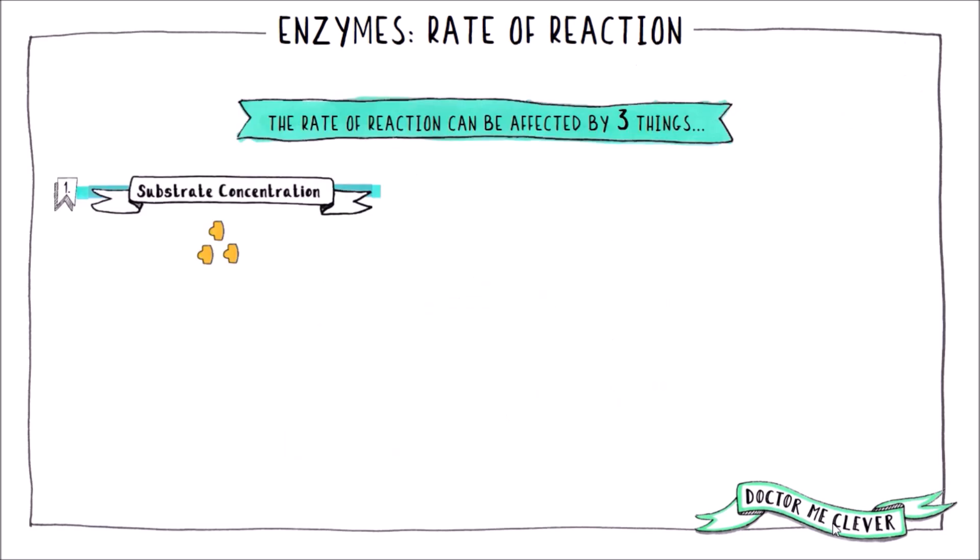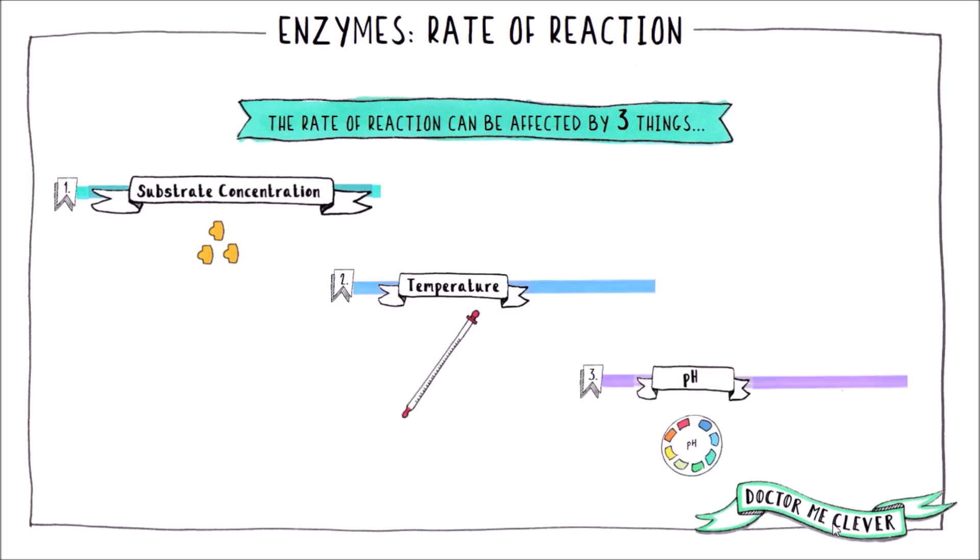There are three variables you need to know about for your exam that can affect the rate of an enzyme catalyzed reaction: substrate concentration, temperature, and pH. Let's look at each of these in turn.